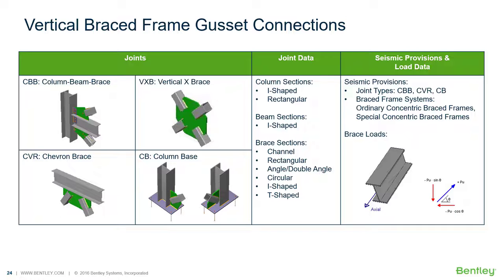In this series of videos we will be focusing our attention on the steel connection workflow for designing gusset connections for a variety of different vertical bracing situations. The different vertical brace joints available in RAM Connections Standalone include the column beam brace joint, the vertical X brace joint, a chevron brace, and also a column base with a gusset connection.